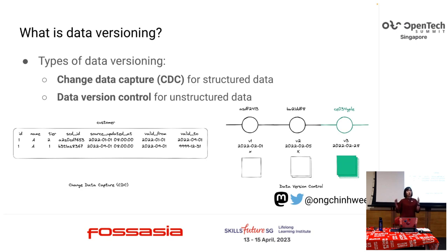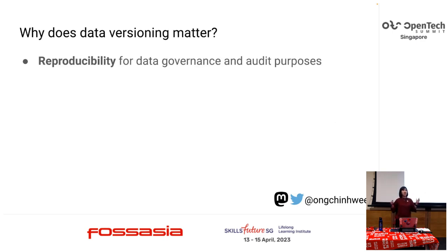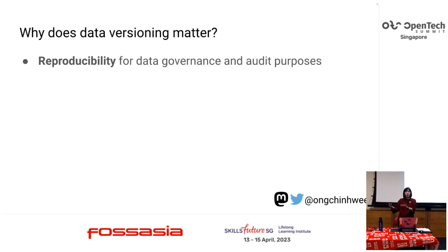Change data capture is the traditional approach using timestamps with valid-from and valid-to fields. Data version control is more like version control for data — examples include Apache Iceberg and DVC. Why does data versioning matter? One key reason is reproducibility for data governance and audit purposes. At year-end, you need to regenerate reports and capture all dimensional changes over time to meet your audit team's requirements.